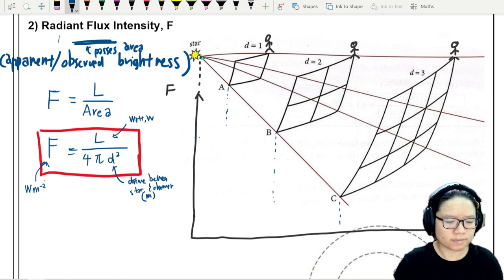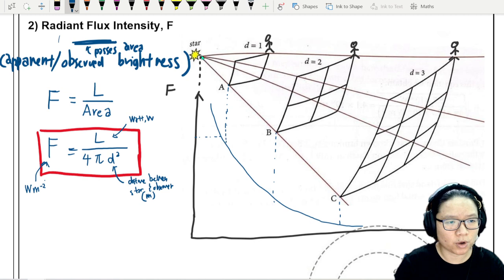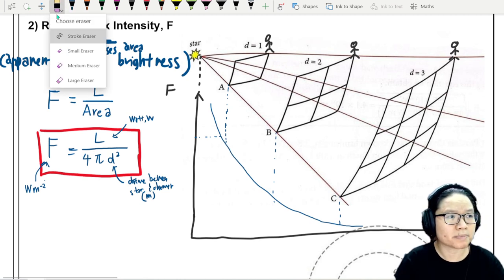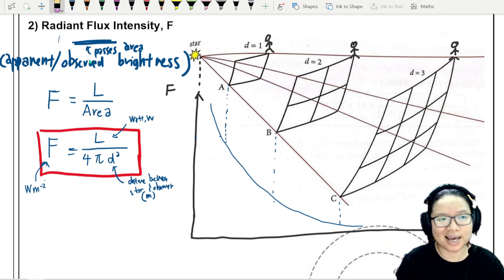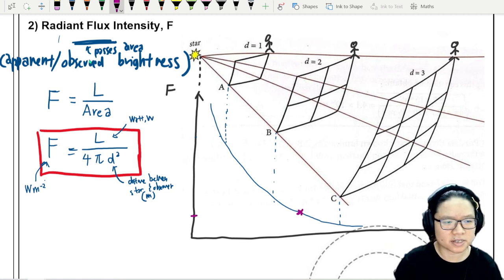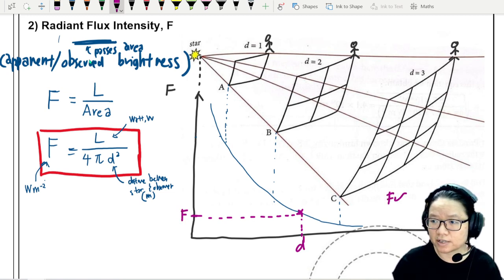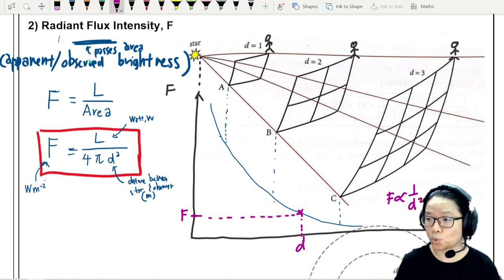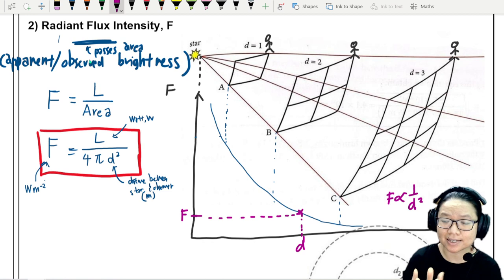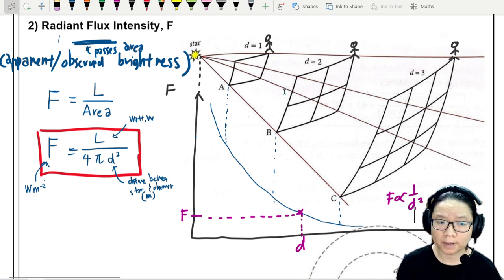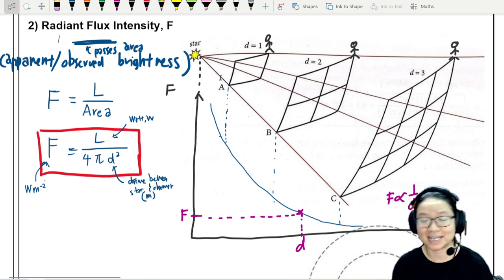So based on what we are measuring on where we are at. So when we think about this, let's say you are looking at a star and you measure the value of F. And then you'll find that this is the value of F that is measured. If we know the luminosity, let's say if we know L, we can actually substitute to find what D is. Because at the end of the day, F is inversely proportional to distance squared. The radiant flux intensity is inversely proportional to distance squared. So this is why we care about this.